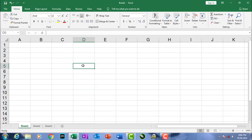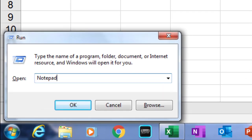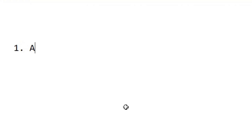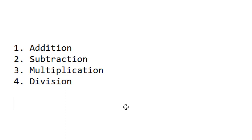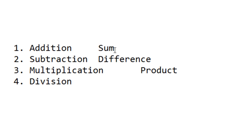In Microsoft Office Excel, mainly there are four types of basic operations: the first one is addition, the second one is subtraction, the third one is multiplication, and the fourth one is division. Before starting to perform these operations, we have to learn what the result of each operation is called — sum is the result of addition, difference is the result of subtraction, product is the result of multiplication, and quotient is the result of division.